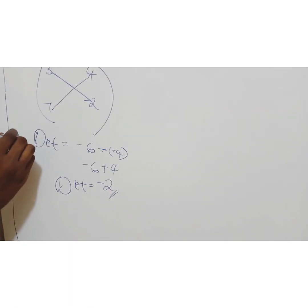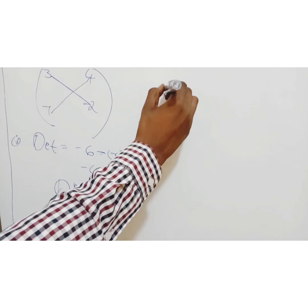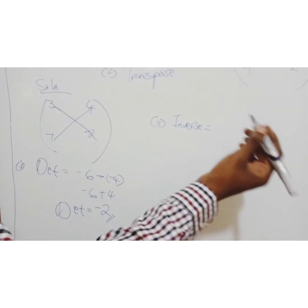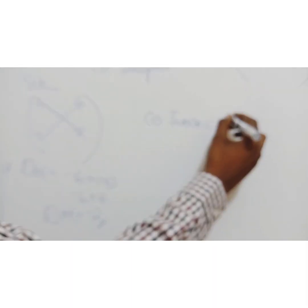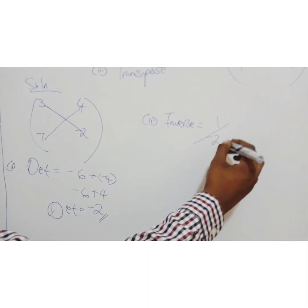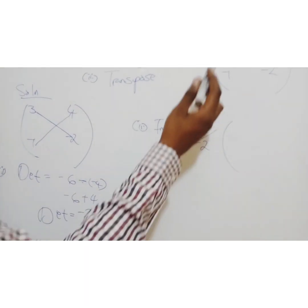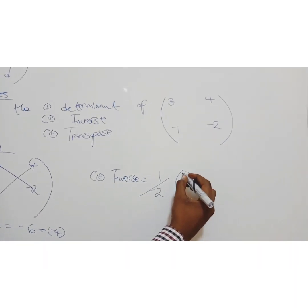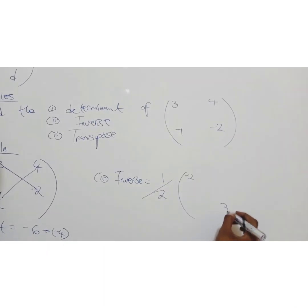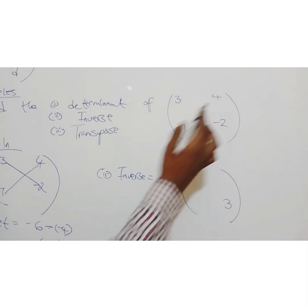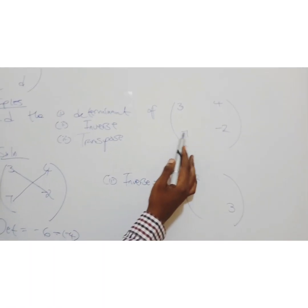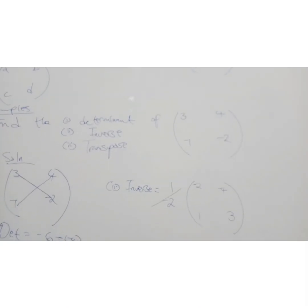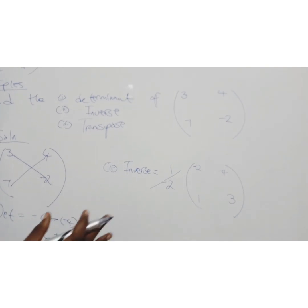We found the determinant. Now for inverse: you have 1 over negative 2 (the determinant). The diagonal elements swap: negative 2 goes to the top-left, and 3 comes to the bottom-right. The off-diagonal elements just change signs: negative 1 becomes positive 1, and 4 becomes negative 4. That's all about inverse.